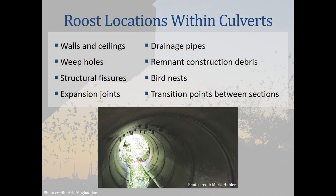In addition to bridge structures, bats have been documented roosting in culverts. Use of culverts as bat roosts is thought to be less common in northern states, but bat occupancy rates were documented as high as 53 to 100 percent at sampled suitable culverts in some southern states. Roost locations within culverts might include walls, ceilings, rough surfaces, weep holes, structural fissures, expansion joints, drainage pipes, remnant construction debris, bird nests, and transition points between culvert sections — for example, where a concrete culvert transitions to a metal culvert or where a box culvert transitions to a circular culvert.